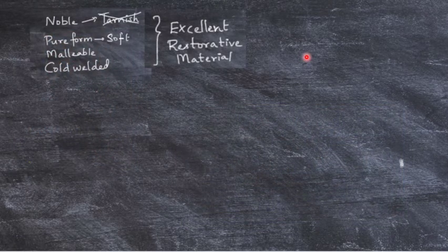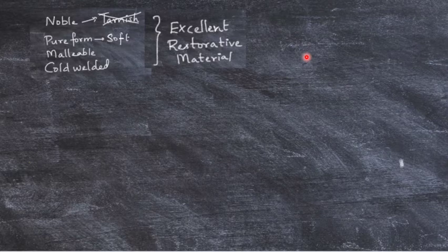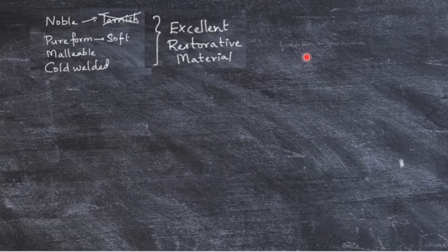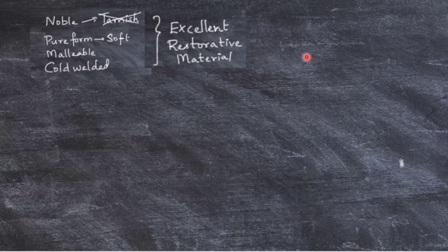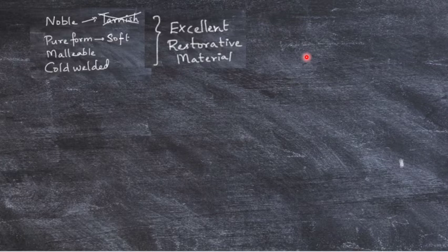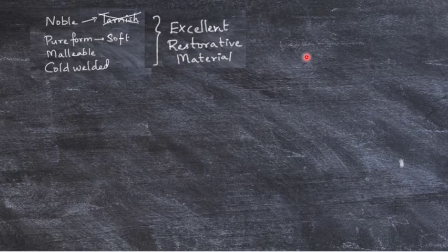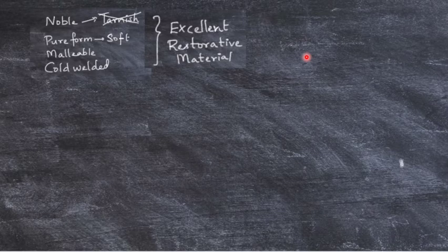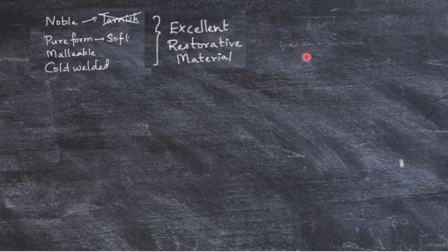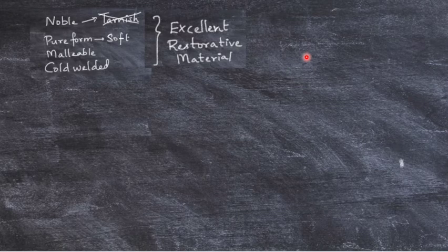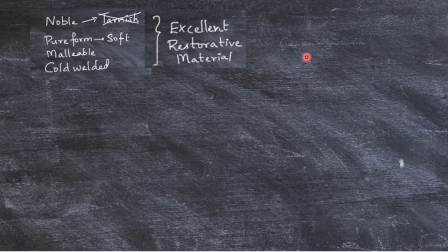What made this material such an excellent one? Being a noble metal, it does not undergo any tarnish or corrosion. In the pure form, gold was soft, so it enabled excellent workability. It was malleable and could be cold welded. With the advent of amalgam and more aesthetic materials like composite, this material is not as widely used today as it was before.